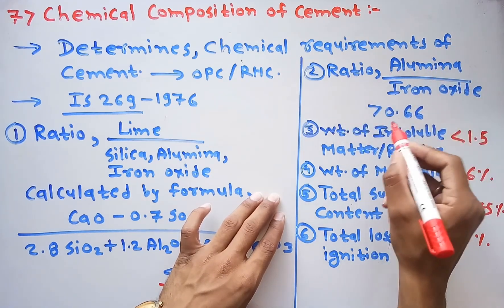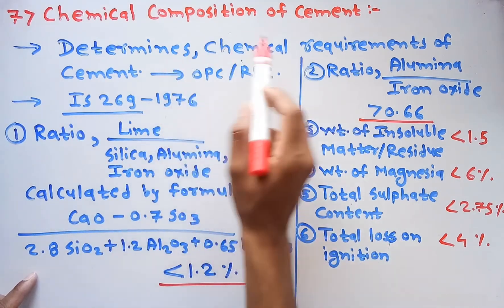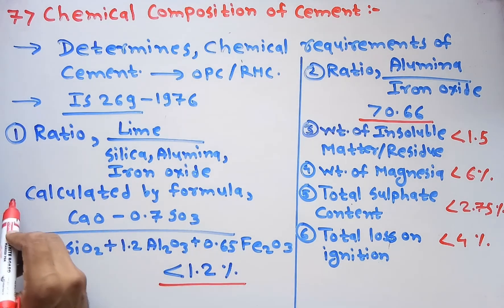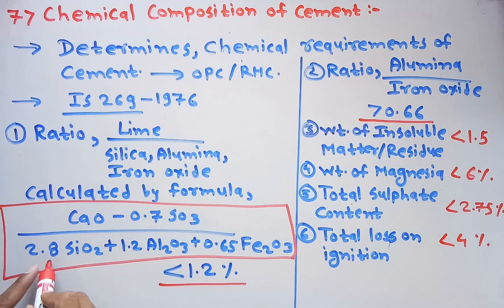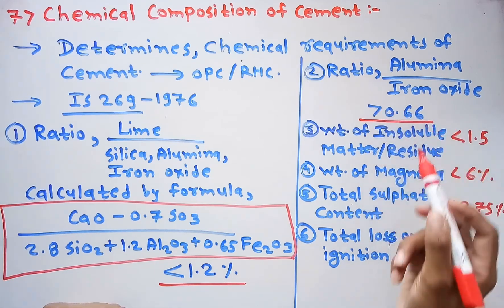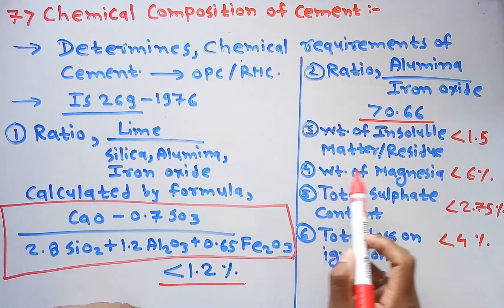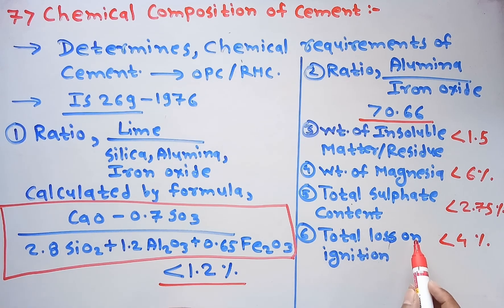To summarize: the ratio of alumina to iron oxide should be greater than 0.66. The lime ratio formula is (CaO − 0.7 SO₃) / (2.8 SiO₂ + 1.2 Al₂O₃ + 0.65 Fe₂O₃) and should be less than 1.2. Weight of insoluble residue less than 1.5%, weight of magnesia less than 6%, total sulphate content less than 2.75%, and total loss on ignition less than 4%. This concludes the chemical composition test.